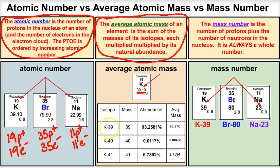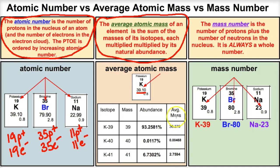For example, there are three naturally occurring isotopes of potassium: potassium-39, potassium-40, and potassium-41. Their relative abundances in nature are 93.2581%, 0.0117%, and 6.7302% respectively. We take each isotope's mass and multiply it by its relative abundance to get the average mass contribution of that isotope. We do this three separate times to get the average mass of each isotope throughout nature.